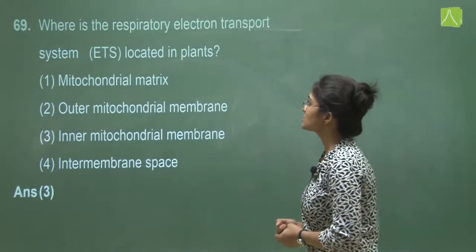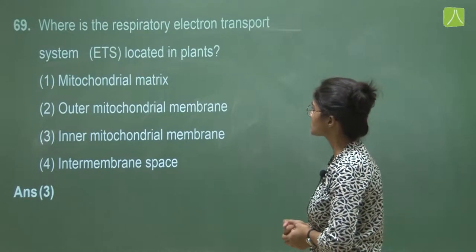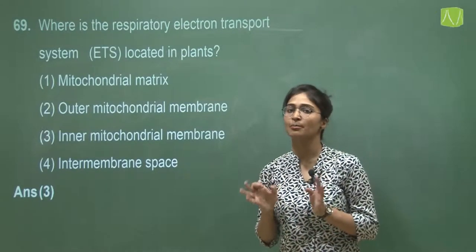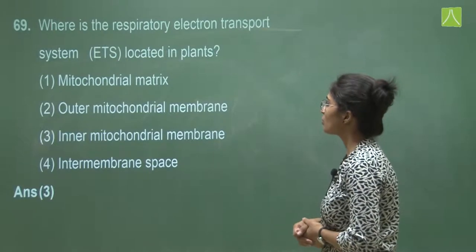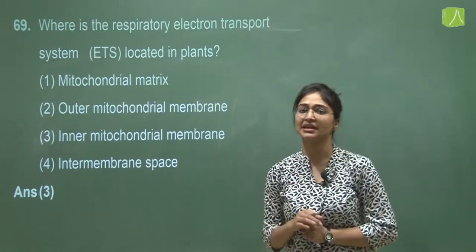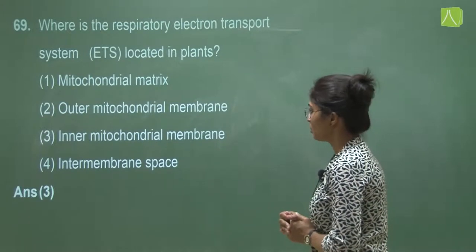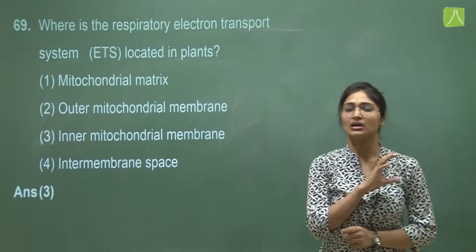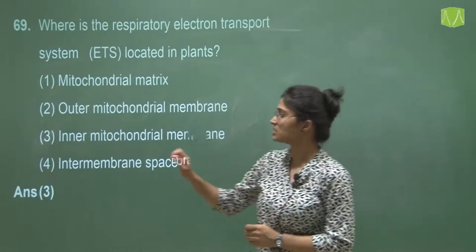Question 69 asks where the respiratory electron transport system (ETS) is located in plants. Option one, mitochondrial matrix — no, the Krebs cycle occurs there. Option two, outer mitochondrial membrane — no. Option three, inner mitochondrial membrane — all the complexes of ETS are arranged in the inner mitochondrial membrane. So the correct answer is option three.